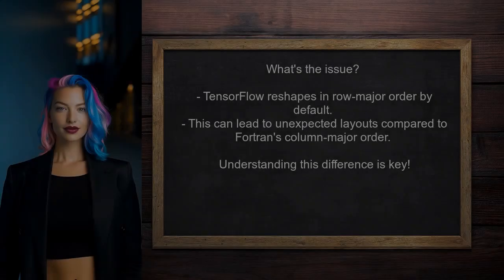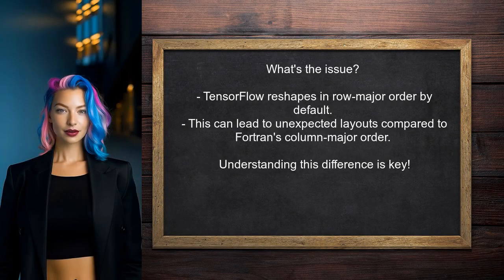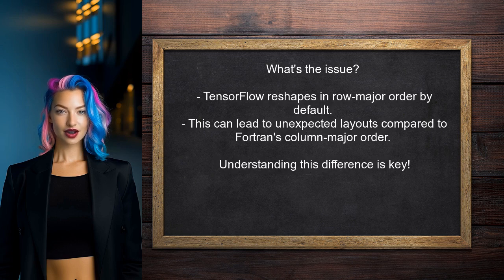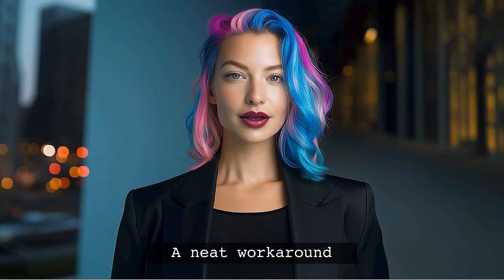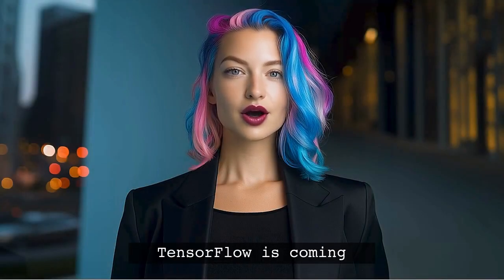So what's the issue here? TensorFlow's default behavior is to reshape tensors in row-major order, which can lead to unexpected layouts when you're used to Fortran's column-major order. Understanding this difference is key to solving the problem. I have a neat workaround that will help you achieve the desired shape in TensorFlow.